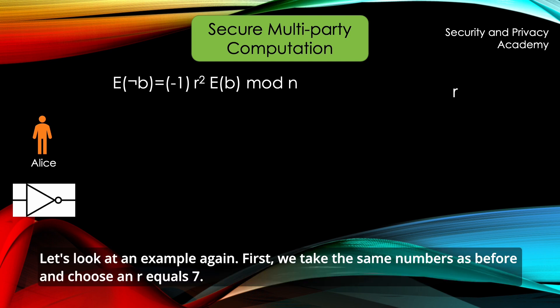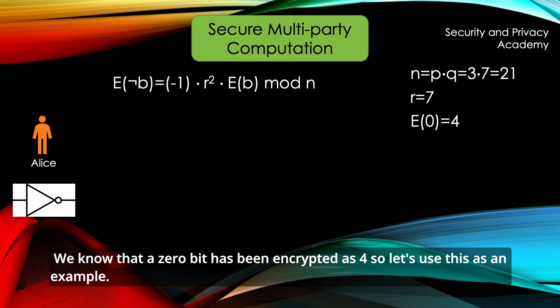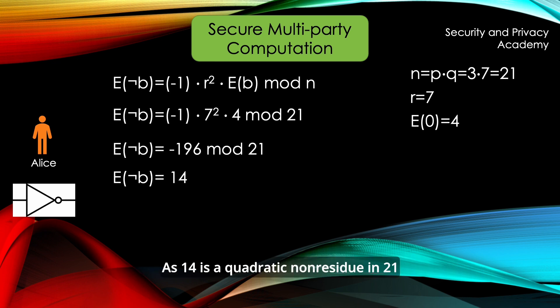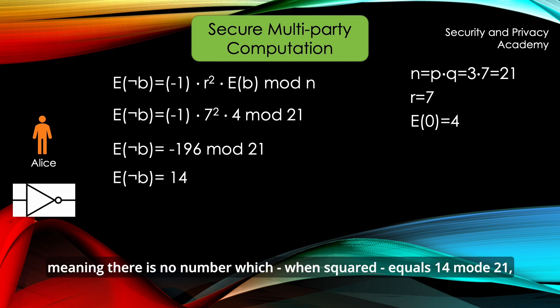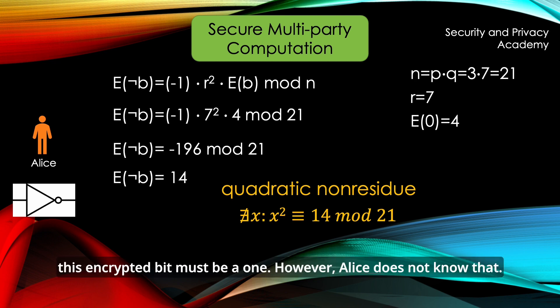Let's look at an example again. First, we take the same numbers as before and choose an R equals 7 and we know that a 0 bit has been encrypted as 4, so let's use this as an example. Calculating it until the end gives 14 as the inversion of 4, as 14 is a quadratic non-residue in 21, meaning there is no number which when squared equals 14, mod 21, this encrypted bit must be a 1.